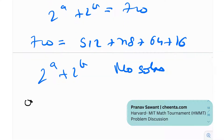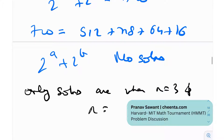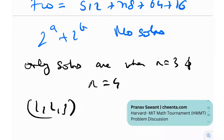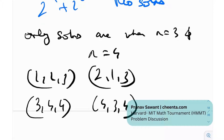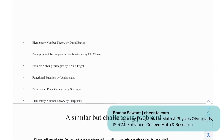Therefore, our only solutions are when n = 3 and n = 4: the triplets (1, 2, 3), (2, 1, 3), (3, 4, 4), and (4, 3, 4). Never forget symmetry — ignoring it would give only two solutions when in reality we have four. Reducing mod n is a very important technique seen from pre-RMO and IOQM all the way up to certain IMO problems.